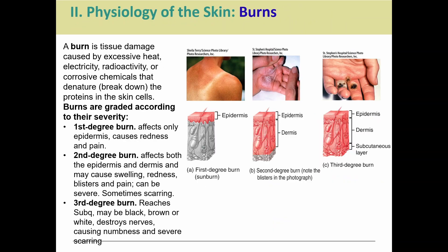Burns involve excessive tissue damage because of heat, electricity, radioactivity, or chemicals. They are graded based on severity. A first-degree burn affects just the epidermis — most people have experienced this. You get redness, it hurts, and then it fades over time. A sunburn or something splashing on you while cooking is generally a first-degree burn.